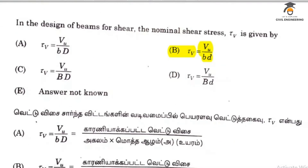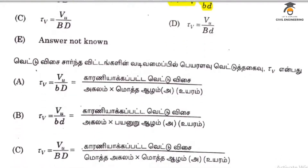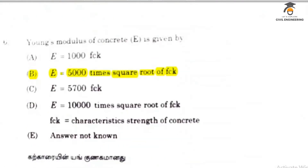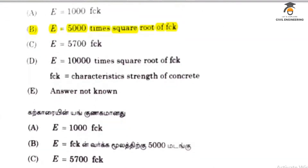Fifth question: In the design of beams for shear, the nominal shear stress formula answer is option B. The modulus of elasticity E is equal to 5000 root fck, option B.